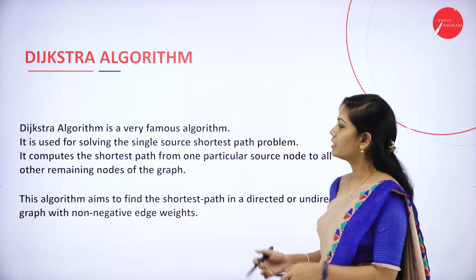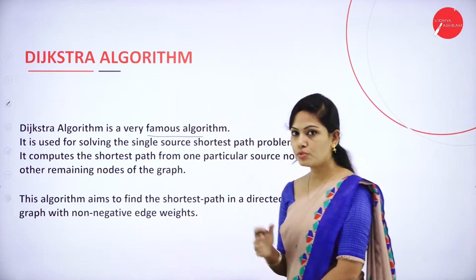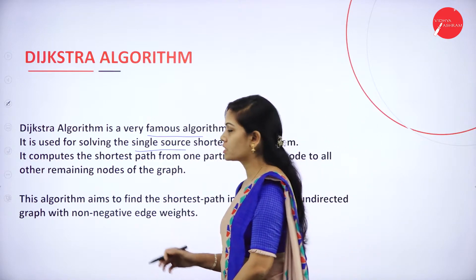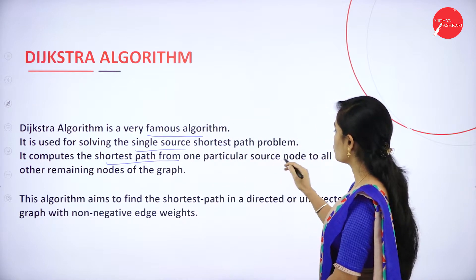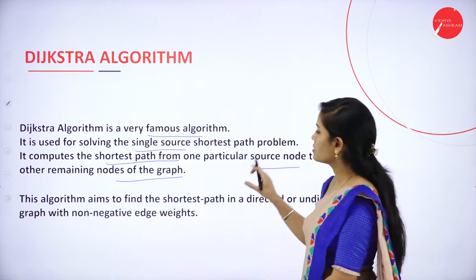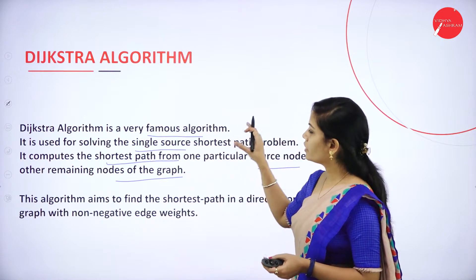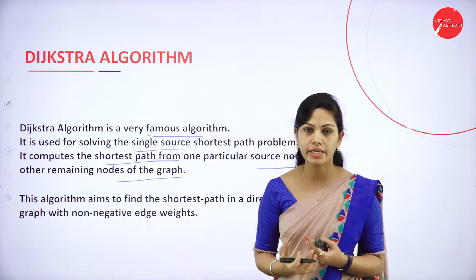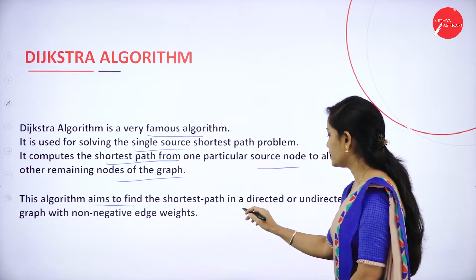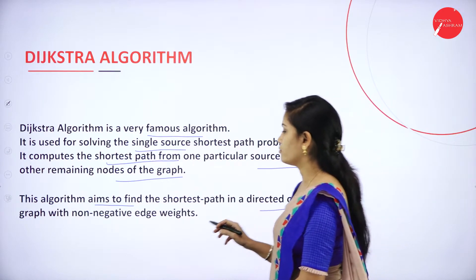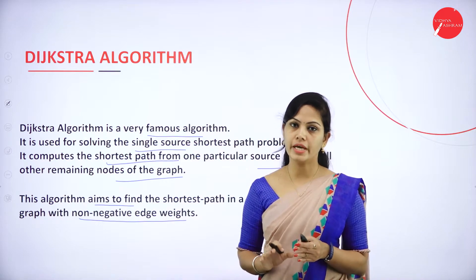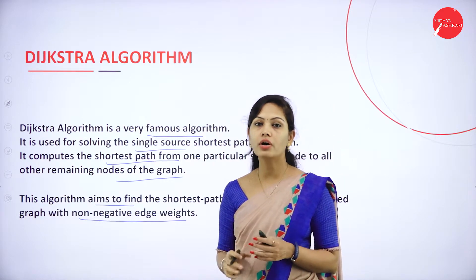Dijkstra's algorithm is a very famous algorithm used for solving the single source shortest path problem. It computes the shortest path from one particular source node to all other remaining nodes of the graph. This algorithm aims to find the shortest path in a directed or undirected graph with non-negative edge weights, meaning all edge weights should be positive.